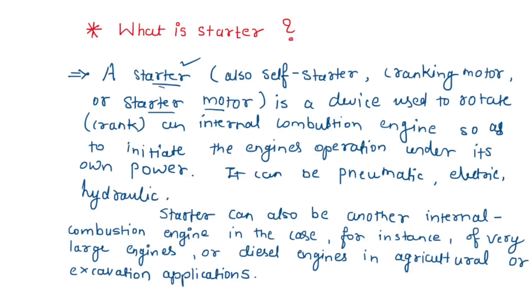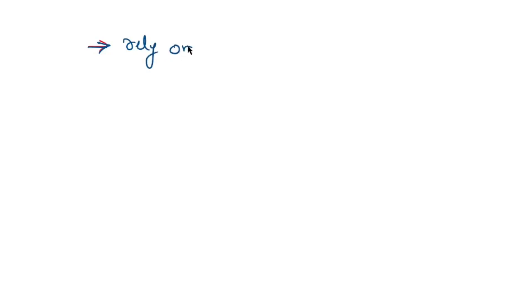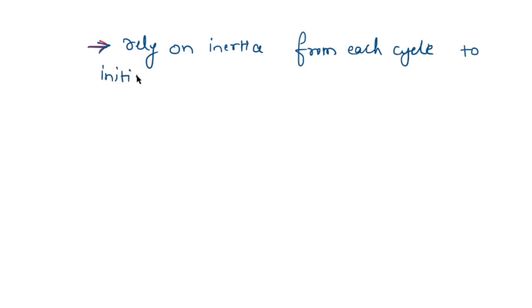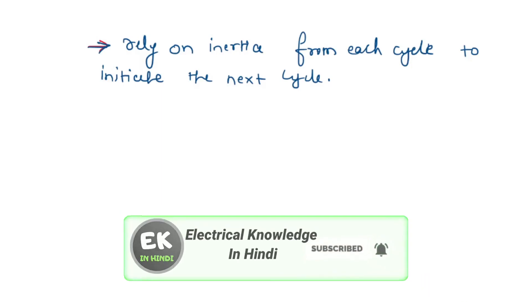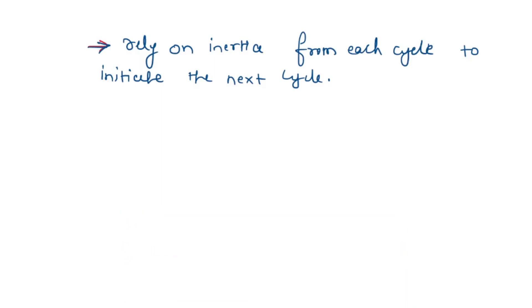The internal combustion engine relies on inertia from each cycle to initiate the next cycle. In a four-stroke engine, the third stroke releases energy from the fuel.